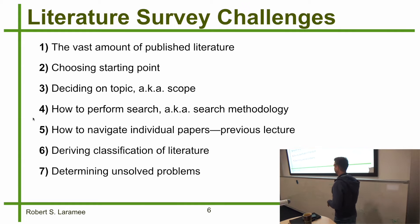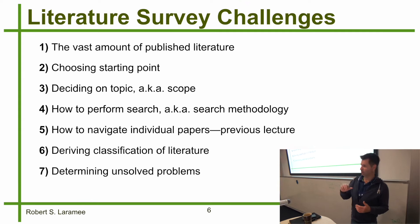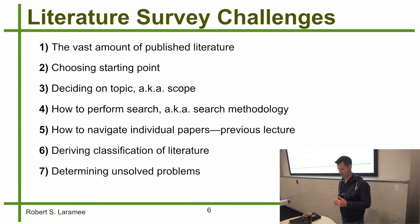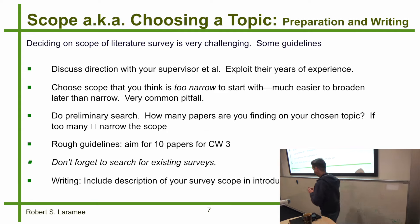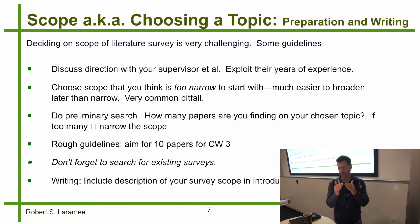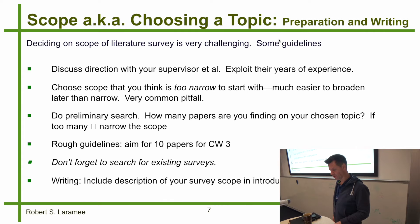You might have noticed that coursework one and coursework three are tied together. Coursework three builds on coursework one, and your dissertation builds on both coursework one and three — it's like preparation for your dissertations. One of the challenges is choosing the topic and choosing how general or narrow that topic should be. This is in the preparation phase, and it's one of the things that makes a literature survey difficult.